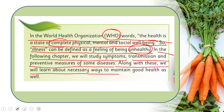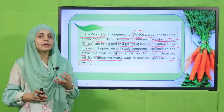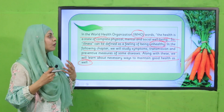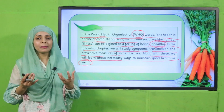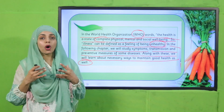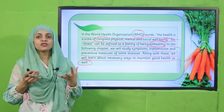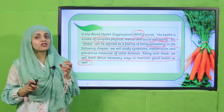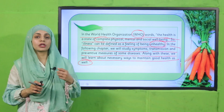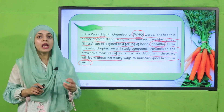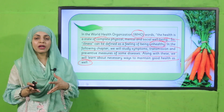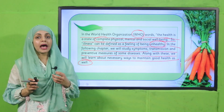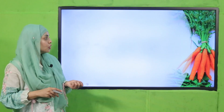Along with these, we will learn about the necessary ways to maintain good health. According to the World Health Organization, your health is your physical and social well-being. If you are ill, that means you are unhealthy. In this chapter, we will discuss what illness is and how we can prevent ourselves from diseases and germs.